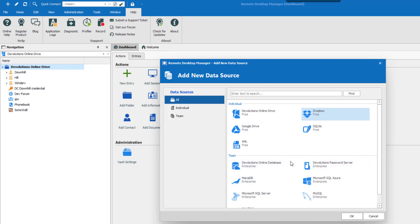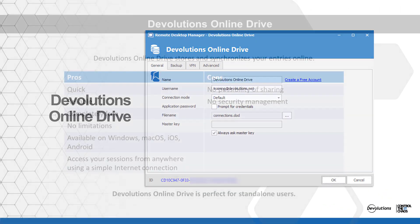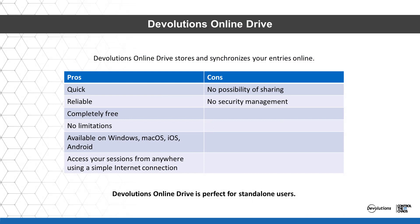So let's take a look at them. Devolutions Online Drive is an online file storage service used to store and synchronize your entries online. You can access your sessions from anywhere using a simple internet connection. It is completely free, has no limitations, and is perfect for single users.